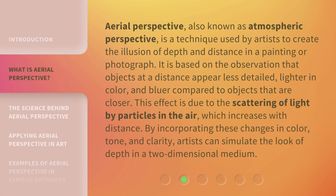Aerial Perspective, also known as Atmospheric Perspective, is a technique used by artists to create the illusion of depth and distance in a painting or photograph. It is based on the observation that objects at a distance appear less detailed, lighter in color, and bluer compared to objects that are closer. This effect is due to the scattering of light by particles in the air, which increases with distance. By incorporating these changes in color, tone, and clarity, artists can simulate the look of depth in a two-dimensional medium.